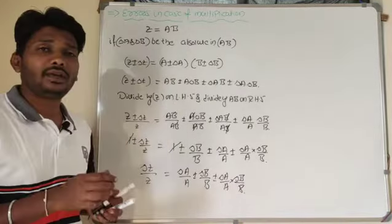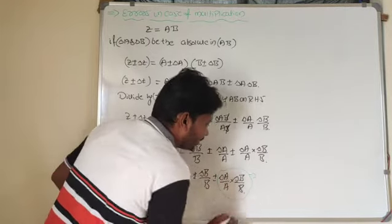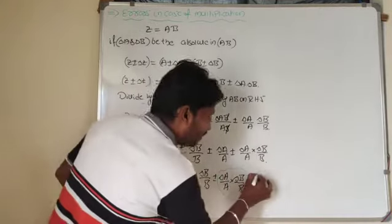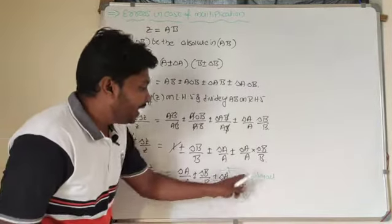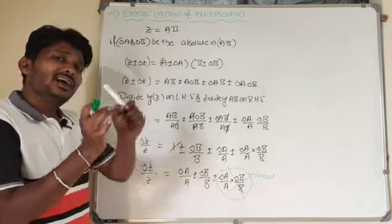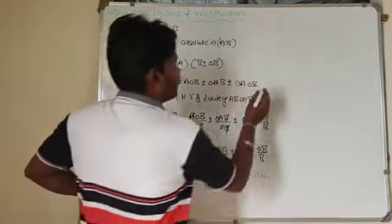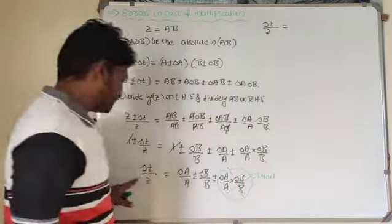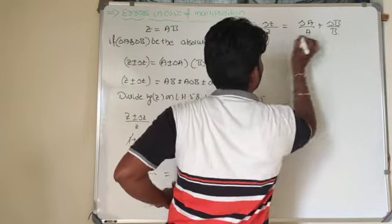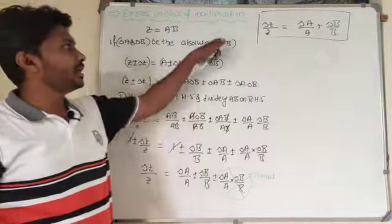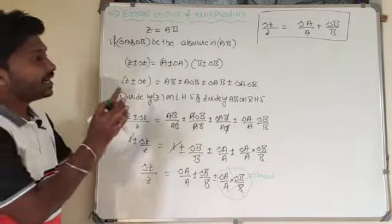The product of delta of a by a and delta of b by b is very small — it is a negligible quantity. So I neglect this term from the main equation. The final equation is: delta of z by z is equal to delta of a by a plus delta of b by b. This is the required equation in case of multiplication.